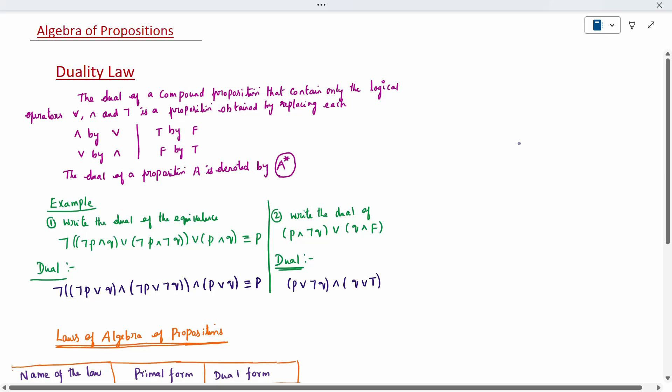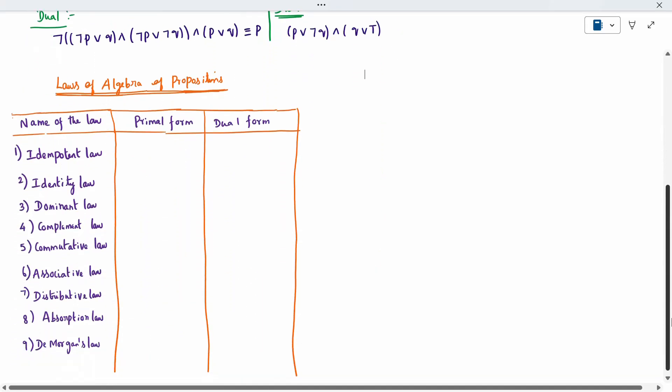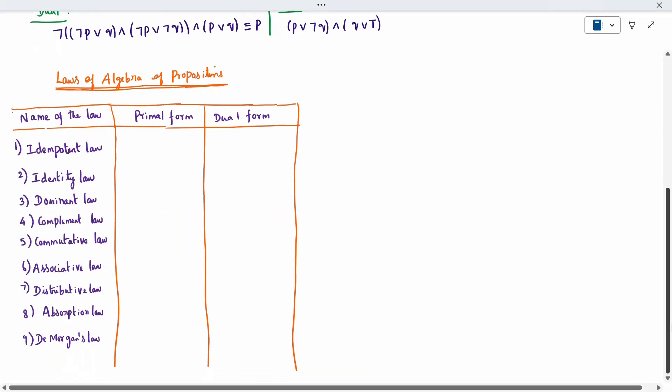There are nine laws when you come with the laws of algebra. What is the primal and dual? Only one set of formulas you remember, the opposite will be the other set. Dual will be the primal opposite. Only one set of formulas you have to remember. What are all the nine laws? Idempotent law, identity law, dominant law, complement law, commutative law, associative law, distributive law, absorption law, and De Morgan's law.